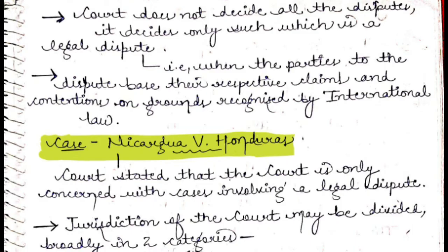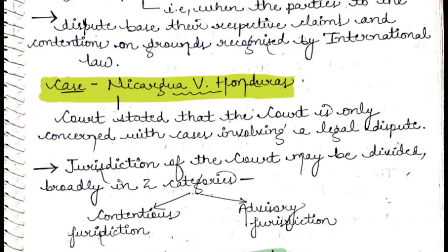A legal dispute is one where the parties base their respective claims and contentions on grounds recognized by international law. In the case of Nicaragua vs. Honduras, the court stated that it is only concerned with cases involving a legal dispute. The jurisdiction of the court is divided into two categories: contentious jurisdiction and advisory jurisdiction.